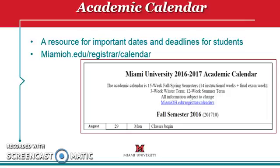The academic calendar is a calendar that notes important dates and deadlines. It shows when classes start and end, and notes other vacations or breaks during the academic year. Note that the dates change each semester. The academic calendar also shows the drop deadline and withdrawal deadline for each semester. Go to MiamiOH.edu/registrar/calendars for more information.